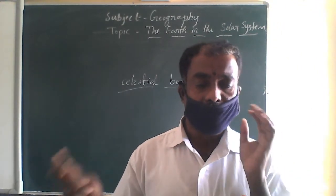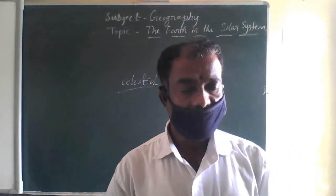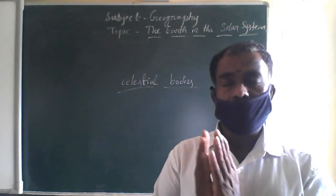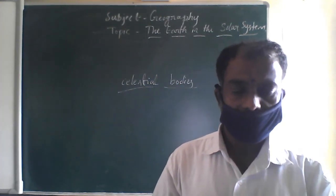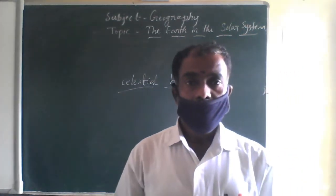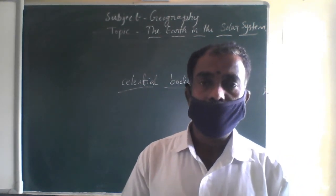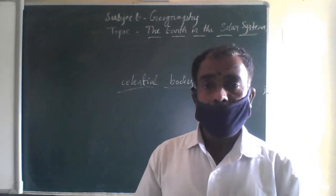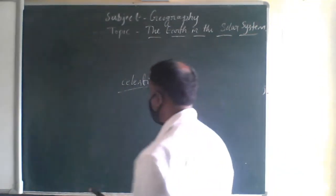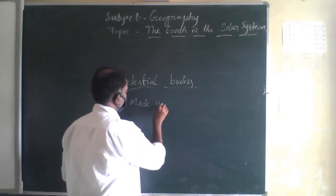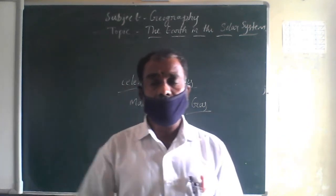These celestial bodies — some are big and some are small. The sizes of these celestial bodies are very different. Some celestial bodies are so big and some are so small. Dear students, these celestial bodies are also very hot, and they are basically made up of gas.